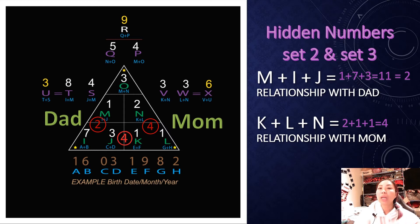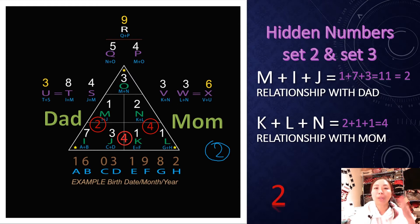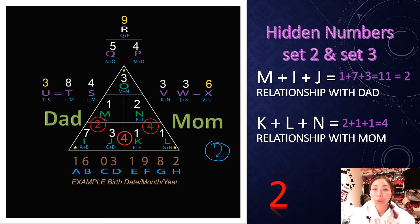If your number is a 2 — when your M, I, J or N, K, L adds up to 2 — that means your relationship with that parent is really, really great. If it happens on the left side, that means you have great communication with your dad and vice versa. Or if it happens on the right side, that means your mom really enjoys talking with you and you have a good relationship with your mom.